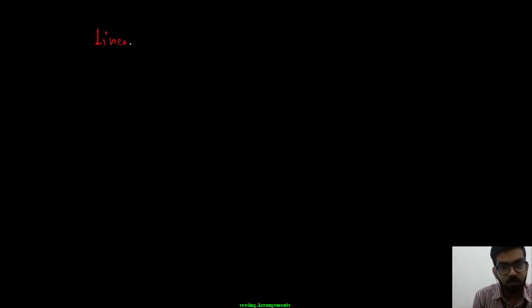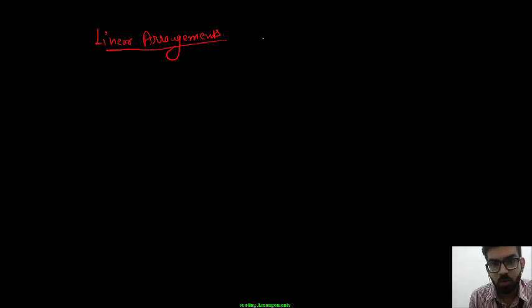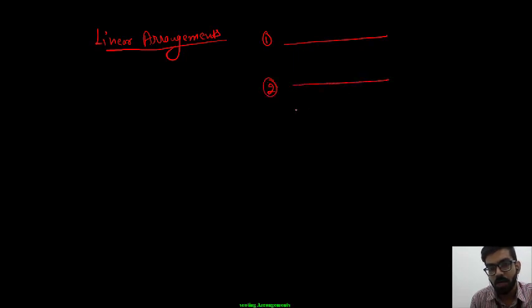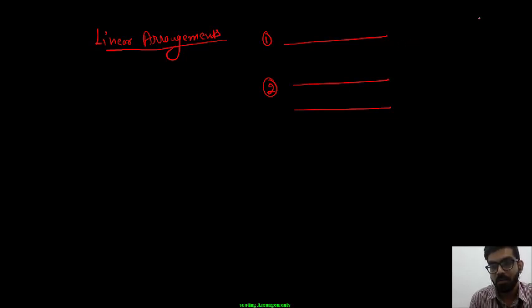In linear arrangements, there are basically two types of questions. Type number one is where persons are sitting in a single row, and type number two is where two rows are given with persons sitting in each row. To solve type number one questions, you need to know the directions: North, South, East and West. We are dealing with North and South directions.